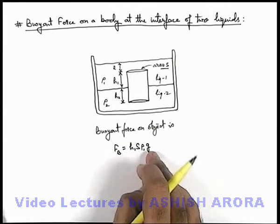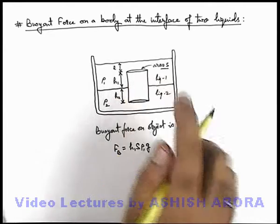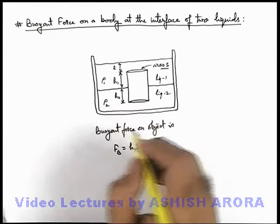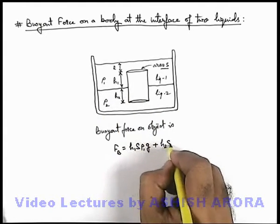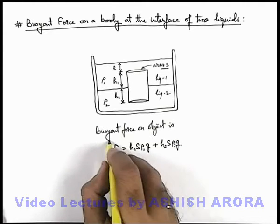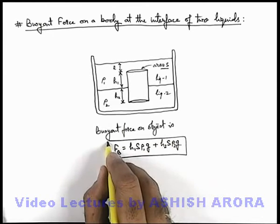Plus weight of liquid 2 which is displaced by the object, that is h₂S ρ₂g. This is the way how we calculate the total buoyant force acting on the body.